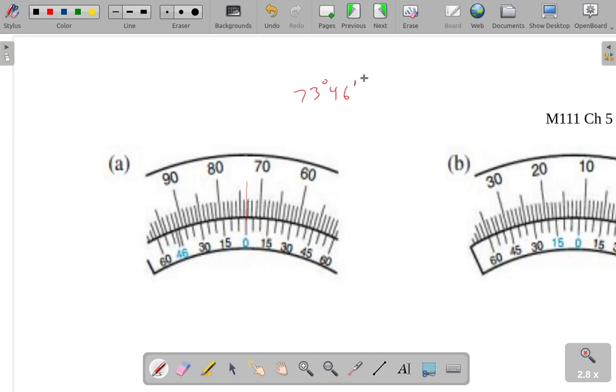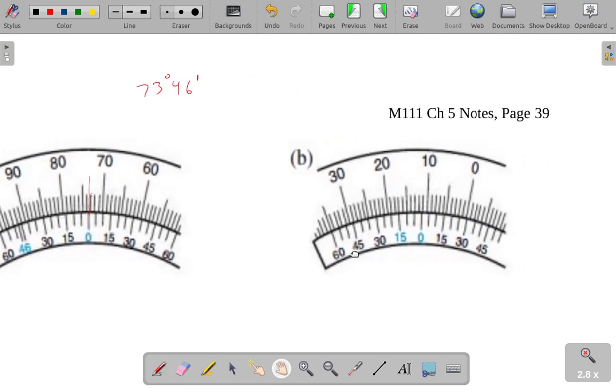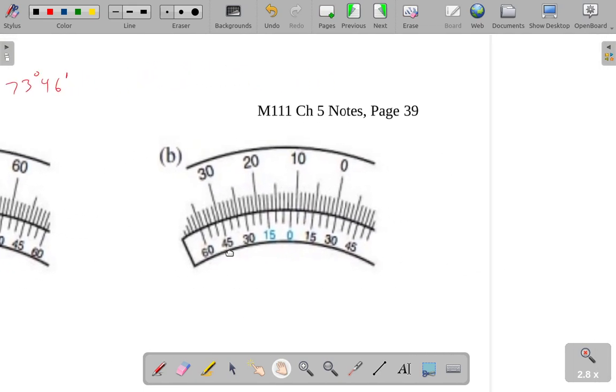because the 46 doesn't show up on this Vernier caliper, but whatever, I'll just take the book at their word. So we get 73 degrees, 46 minutes.